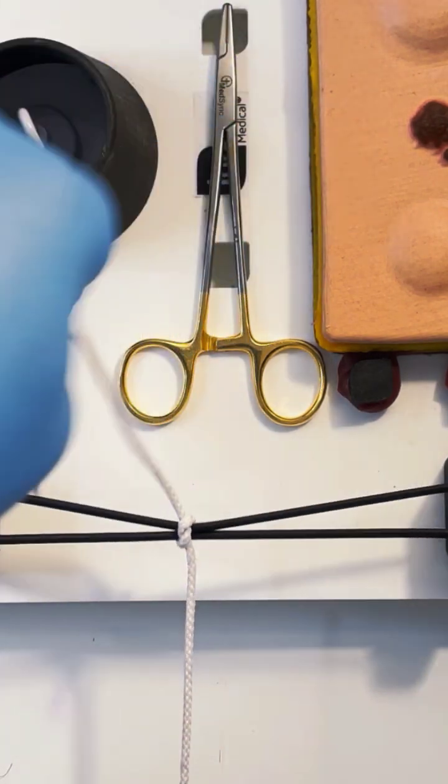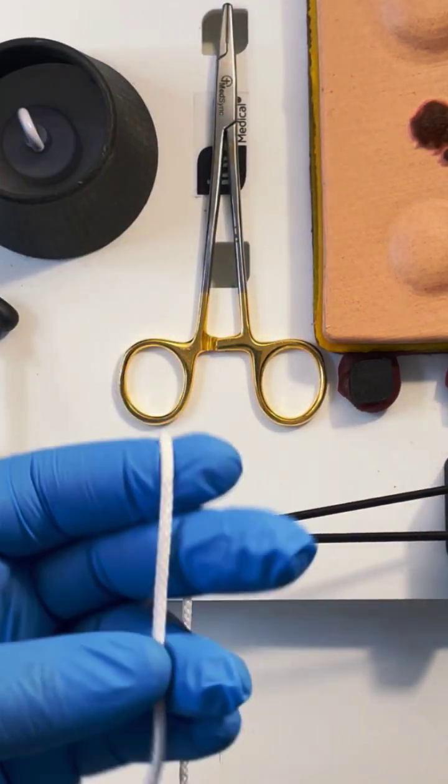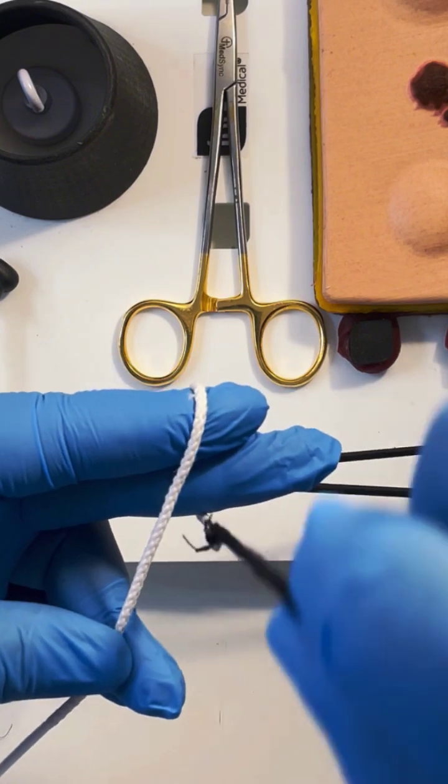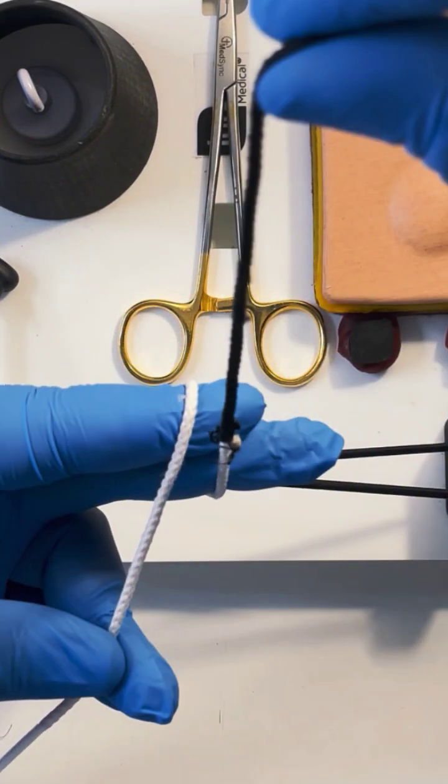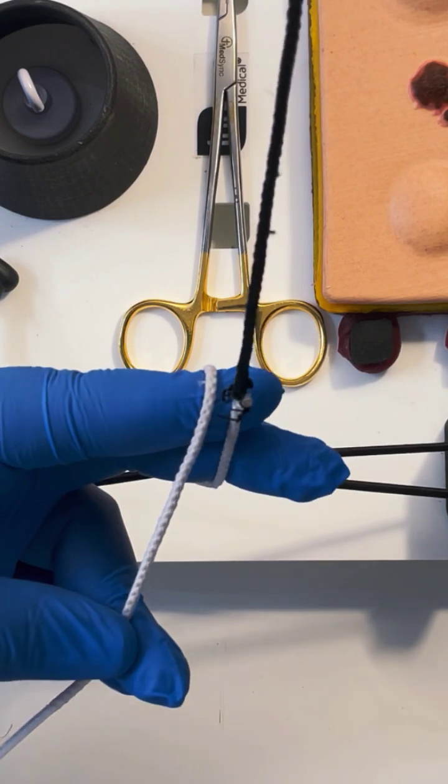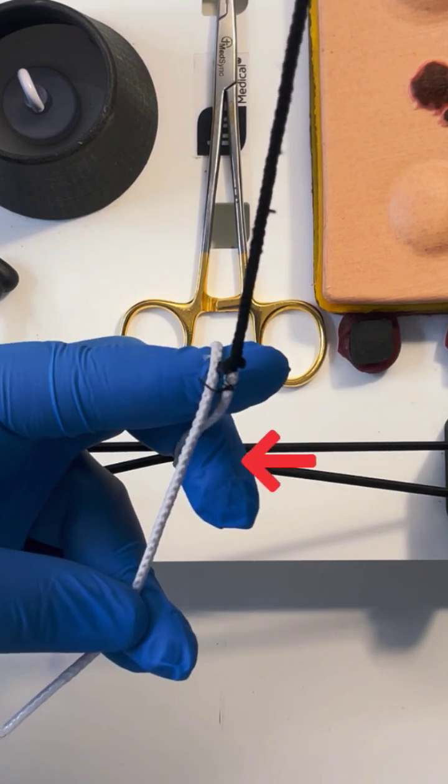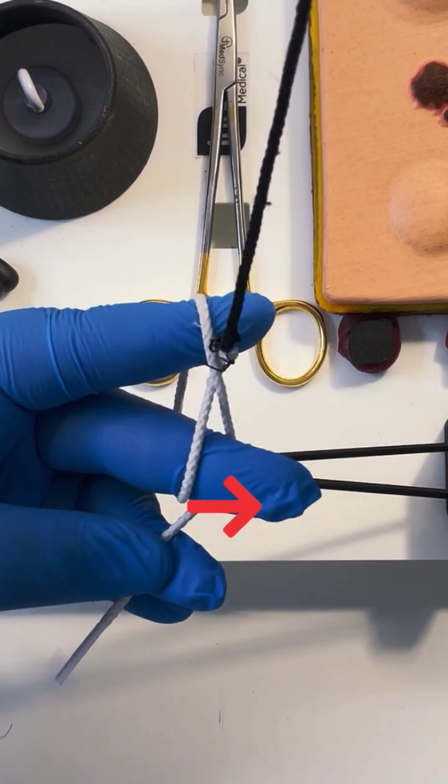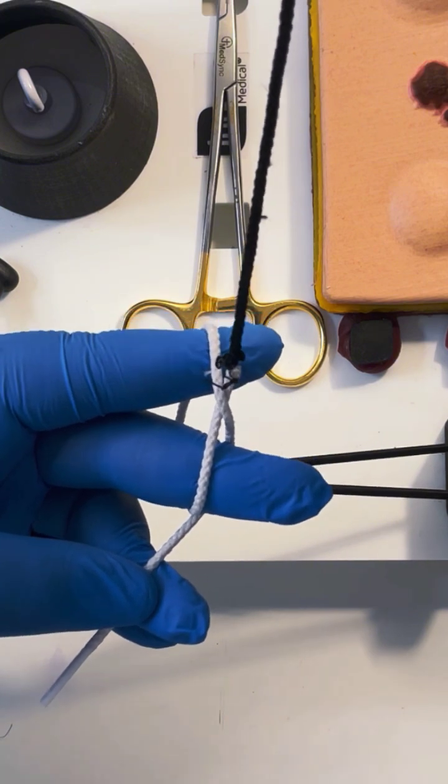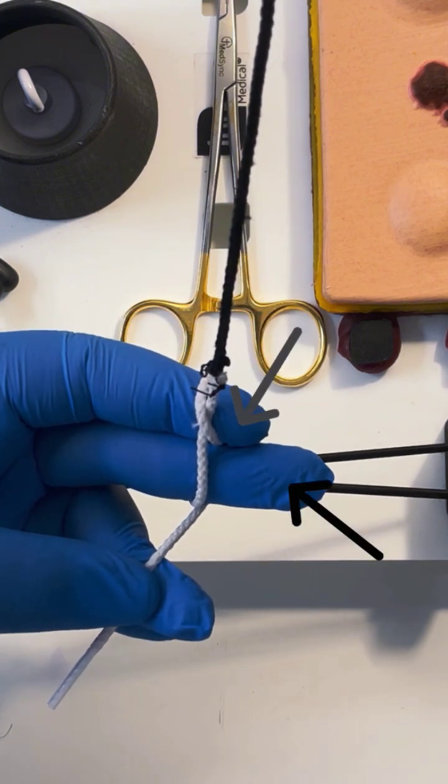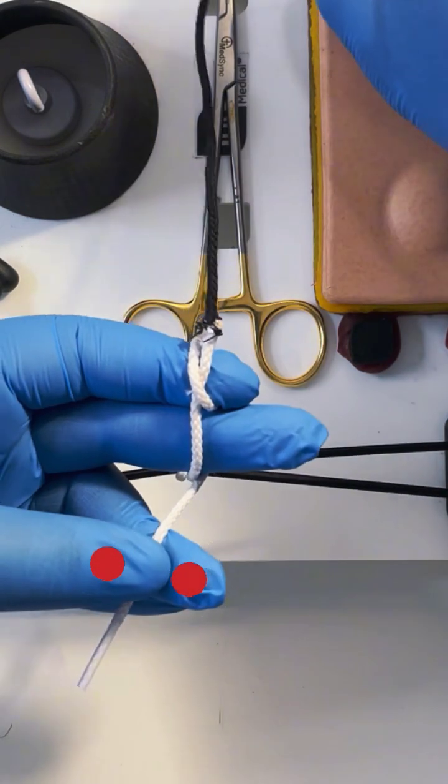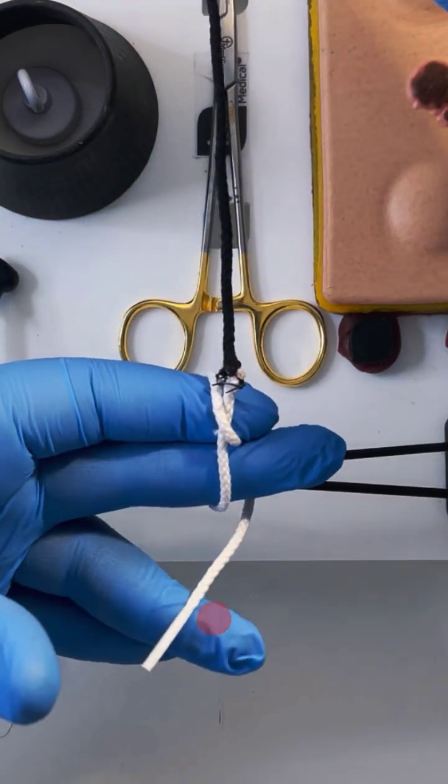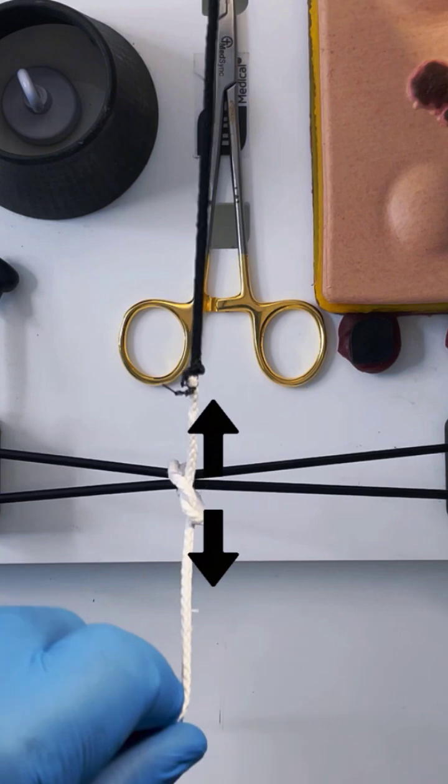You now need to do a going down throw. This is the easy way. Have a short end going down your fingers, a long end coming up. Bend your middle finger over the long under the short. Squeeze it between your index and middle. Let go between your thumb and ring and pull the short suture through the loop.